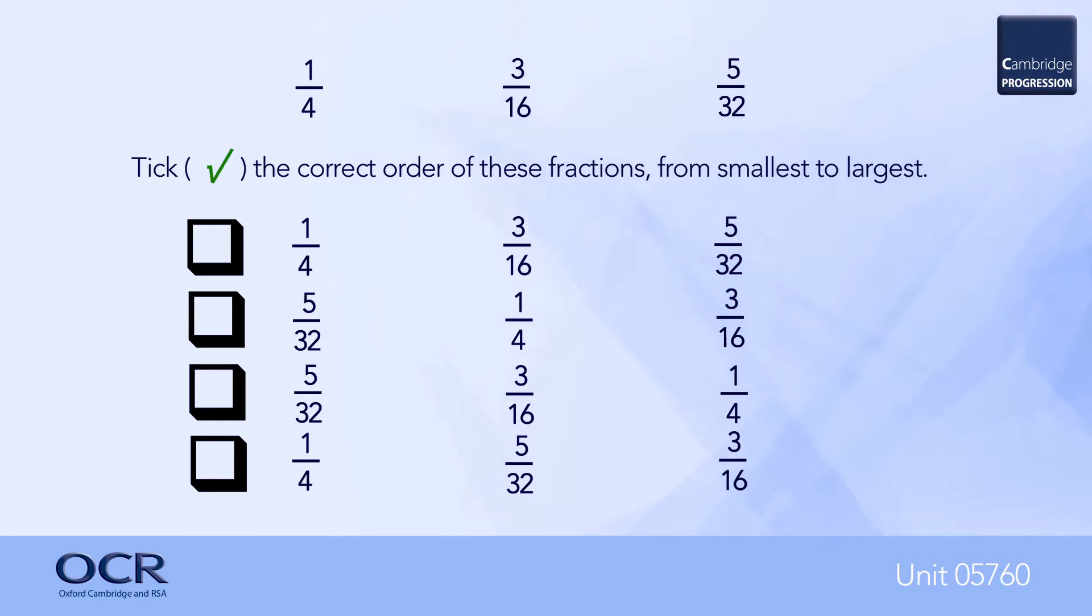Unless the fractions being compared are straightforward ones, like a half or a quarter, they will need to have a common denominator. In other words, they will be changed into equivalent fractions, so that the size of their numerators indicates their relative sizes.